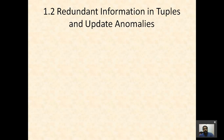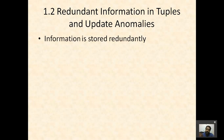The second guideline is about redundant information in tuples and update anomalies. We'll learn what problems arise when we store redundant information in rows. If you are storing redundant information, there can be different problems. One main problem is wastage of storage — we are storing information in a repetitive manner. The second important problem is that it can cause update anomalies.